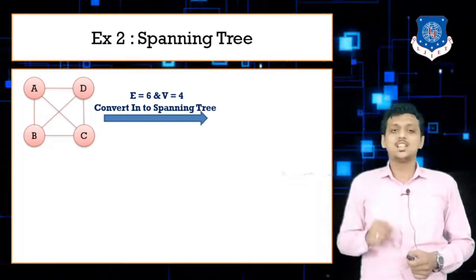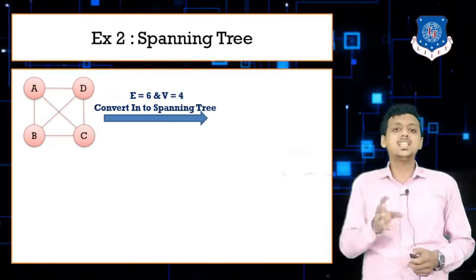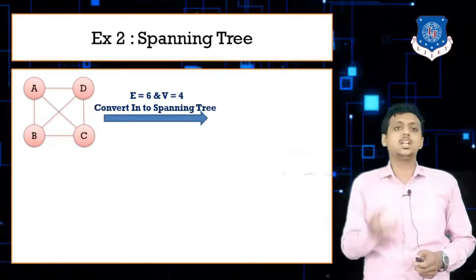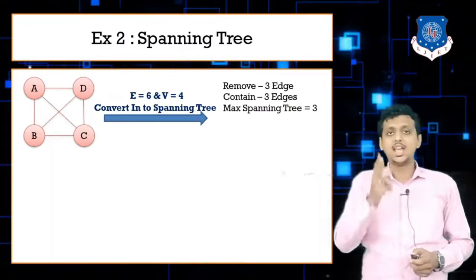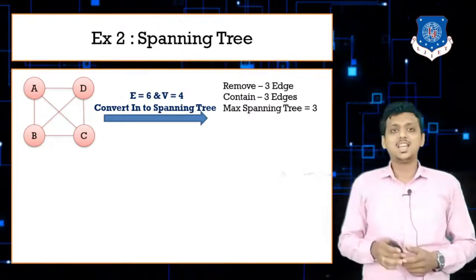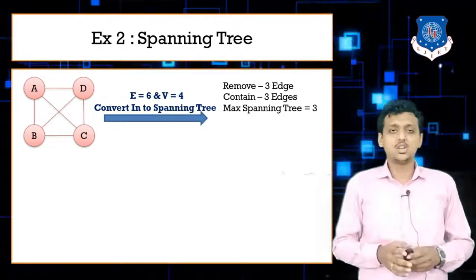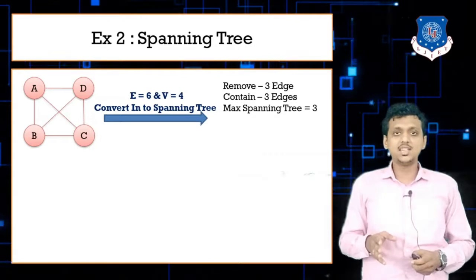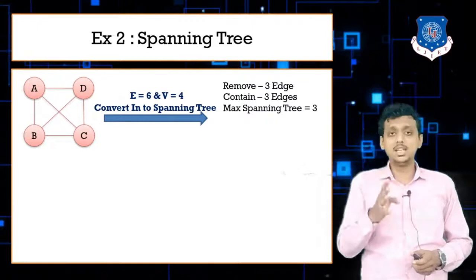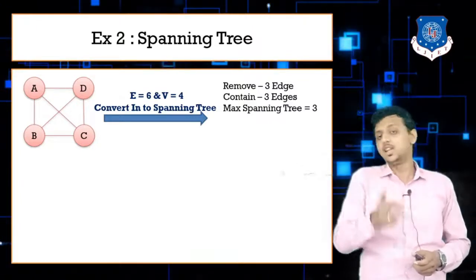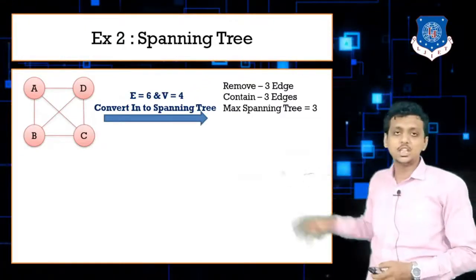We need to understand how many edges our spanning tree should contain. We need to remove E minus V plus 1 edges. E is 6 and V is 4, that means 6 minus 4 plus 1, which becomes 3. So you need to remove 3 edges, and your spanning tree will have 3 edges remaining out of the original 6.